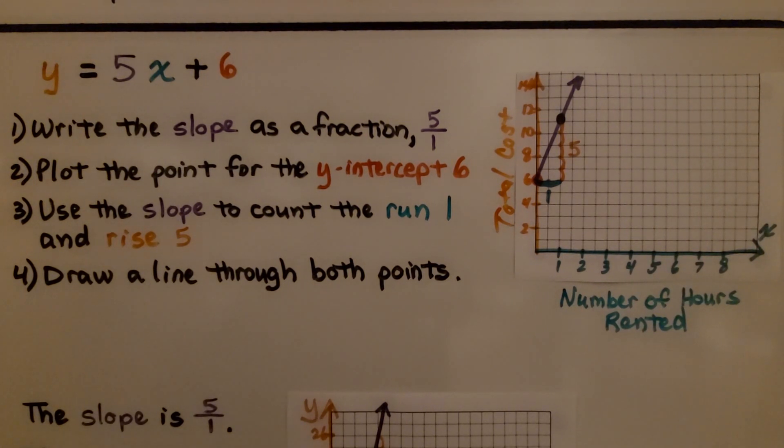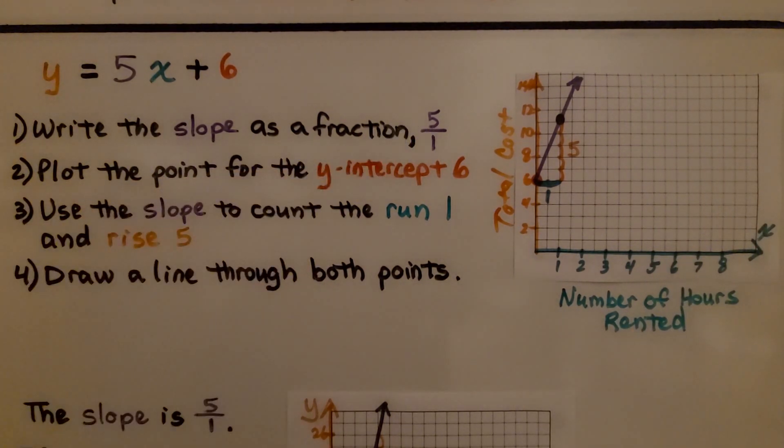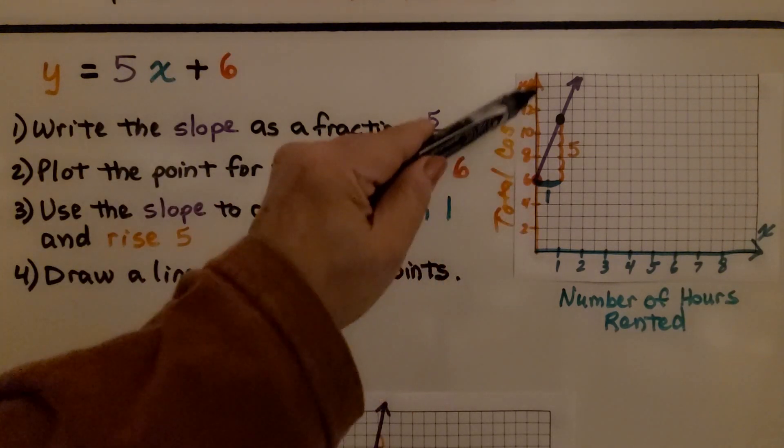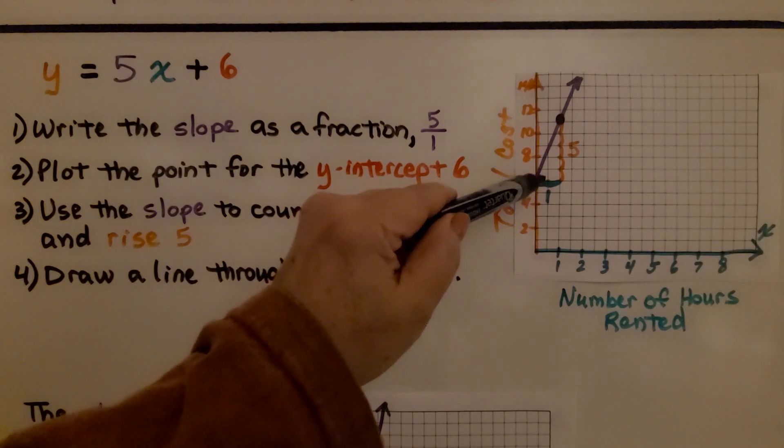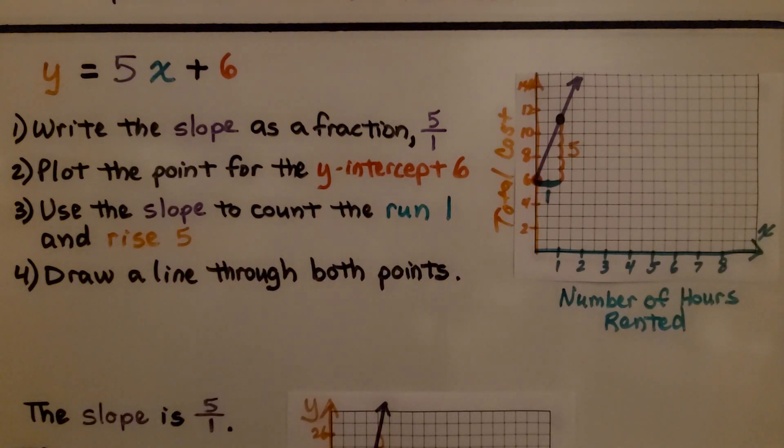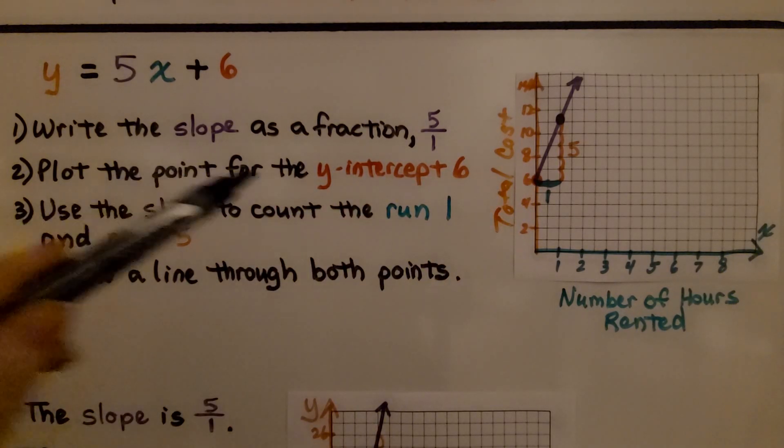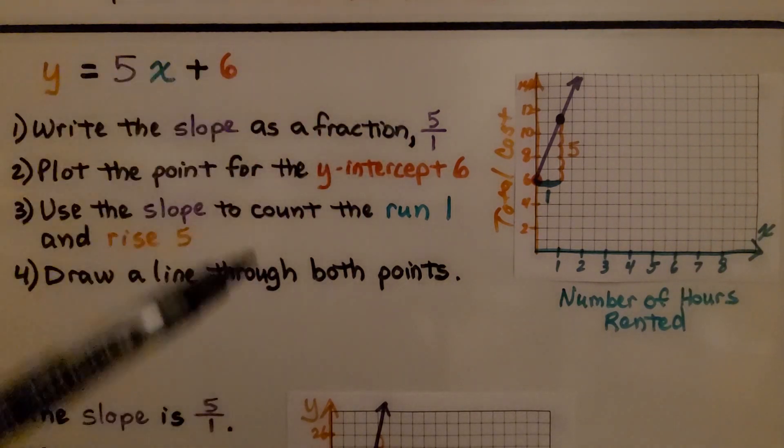We write the slope as a fraction. So we have 5 over 1. We plot the point for the y-intercept, the 6. So on the y-axis, we plot 6 right here. We use the slope to count the run, which is 1, and the rise, which is 5.